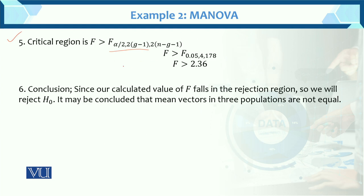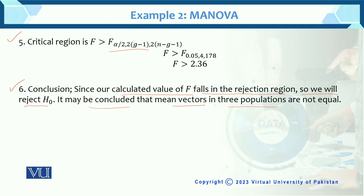Since 192 is greater than 2.36, the calculated F value falls in the critical region, so we reject H0. It is concluded that the mean vectors of the three populations are not equal. The null hypothesis that all three mean vectors are equal is rejected. Final conclusion: all three population mean vectors are not equal.